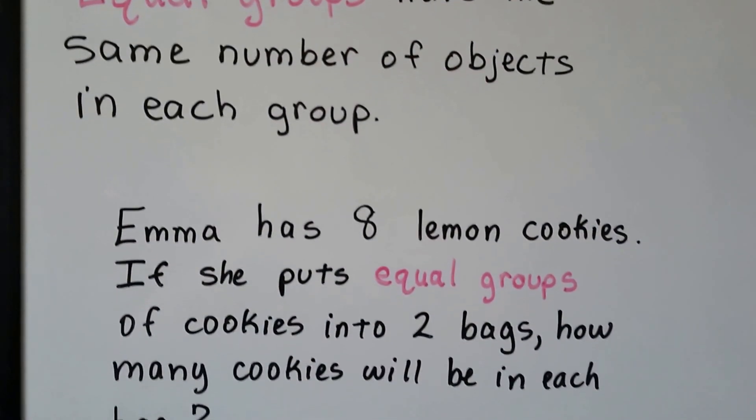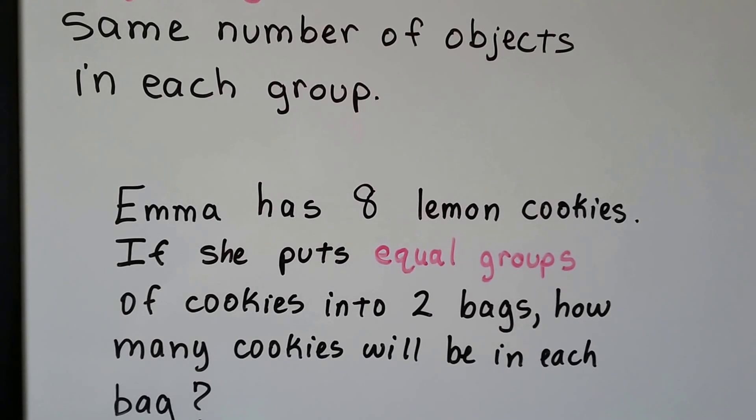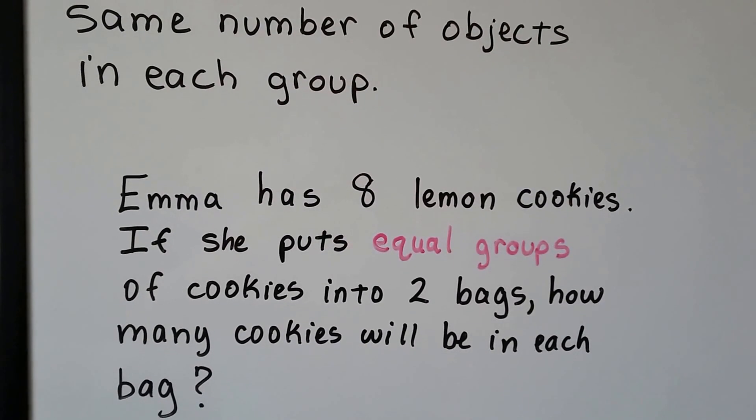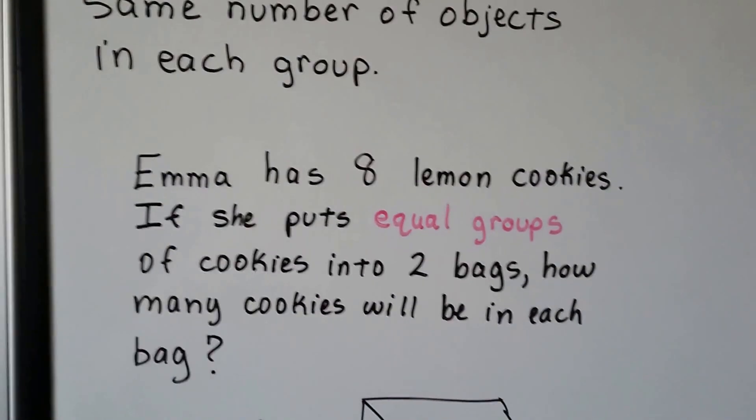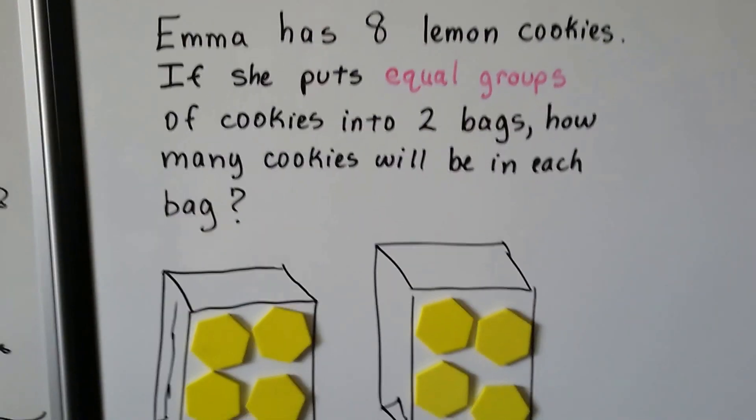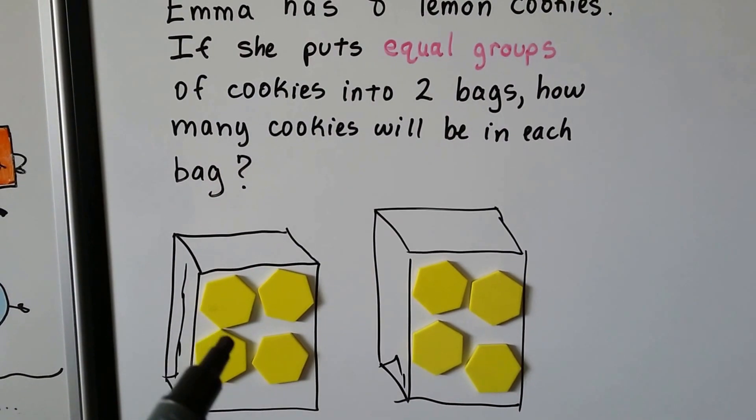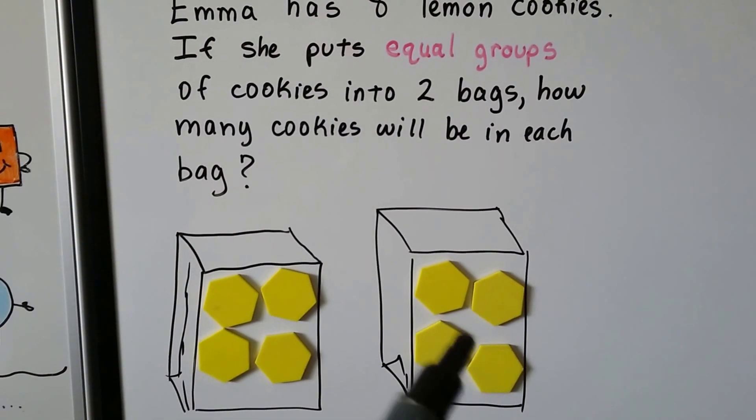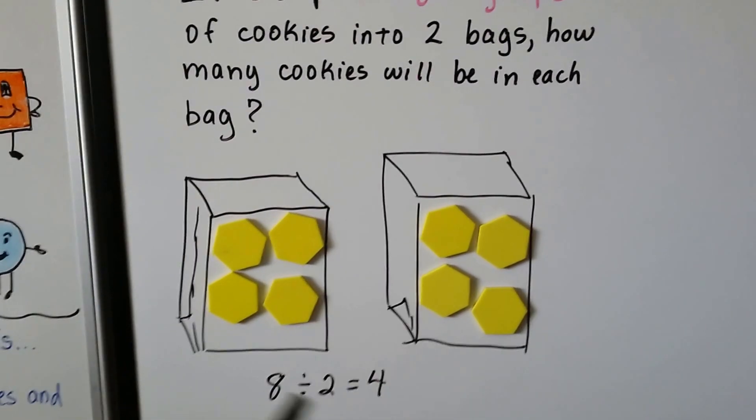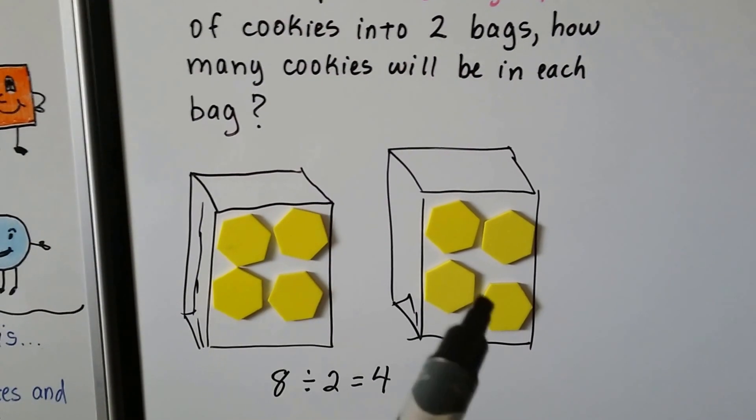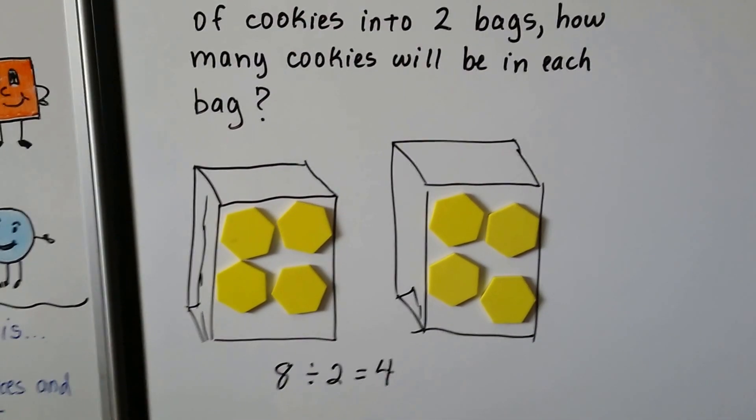So Emma has eight lemon cookies. If she puts equal groups of cookies into two bags, how many cookies will be in each bag? Well, she's got eight cookies. She wants to put the same number into two bags. If she puts four cookies in each bag, they'll have equal groups. Eight cookies divided into two bags is four cookies for each bag.